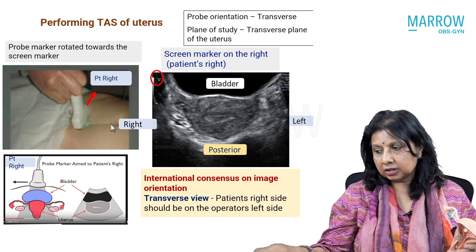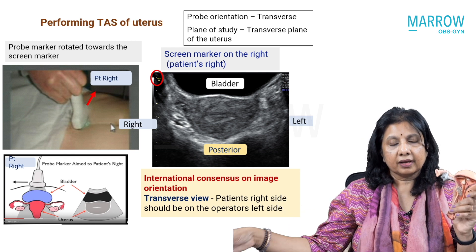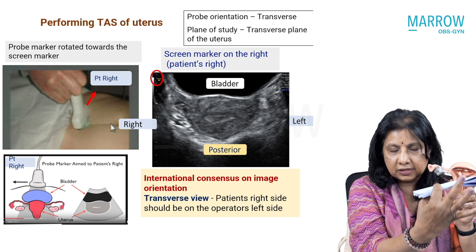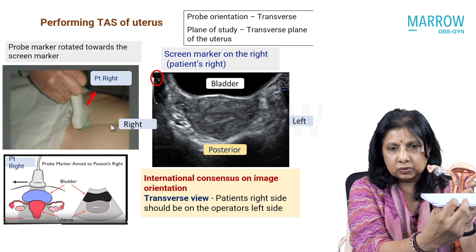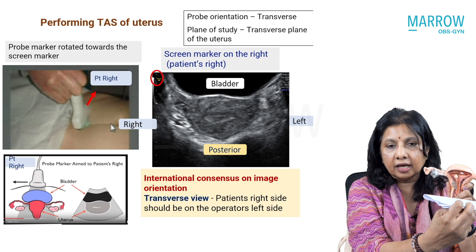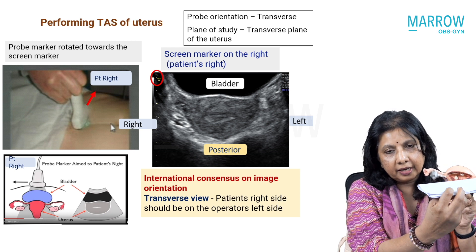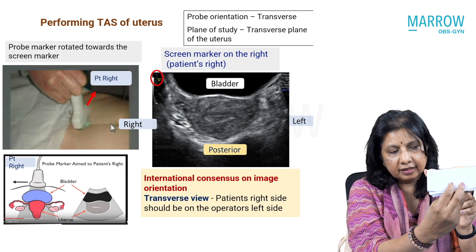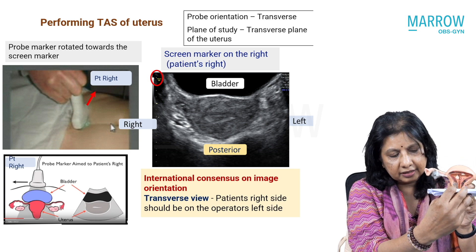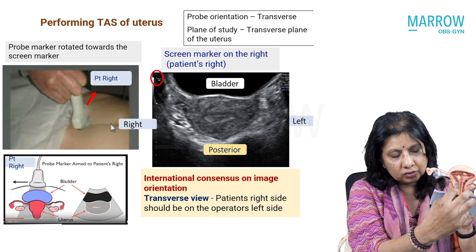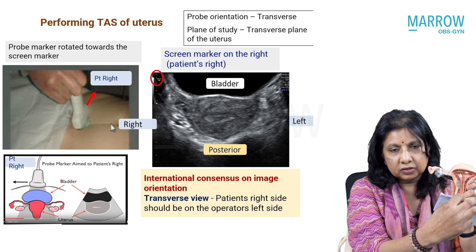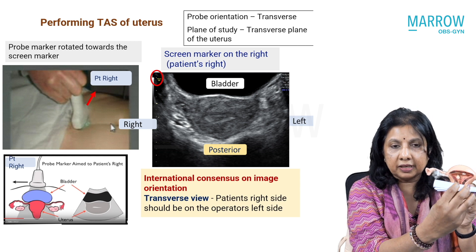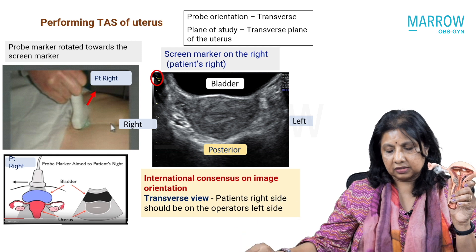So in order to study all the planes, I will actually sweep. Because this is a fan, I can't sweep it sideways — I am sweeping up and down. When I'm going up, I always say go up so that you lose the fundus, then come to the body of the fundus. And then when you go down, you'll look at the cervix. So I am evaluating the entire uterus in transverse planes, right from the cervix to the fundus.